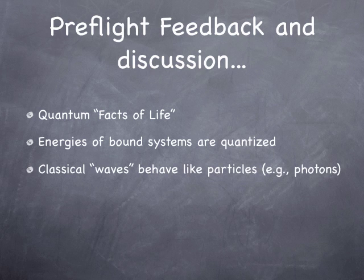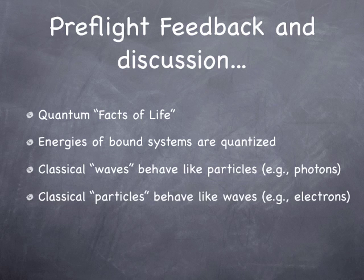Also, things that are classically waves — like electromagnetic waves — in quantum mechanics end up behaving like particles. Photons, for example, are so-called particles of light with particle behavior. We saw last week with the two-slit experiment that things can have a wave character but also a particle character. Classical particles — things we normally think of as particles, like electrons — also have wave characteristics. We saw that again last week.